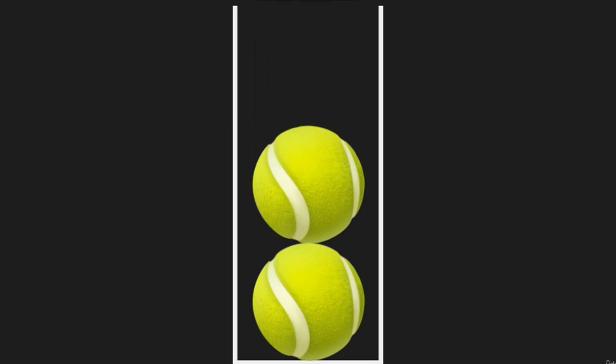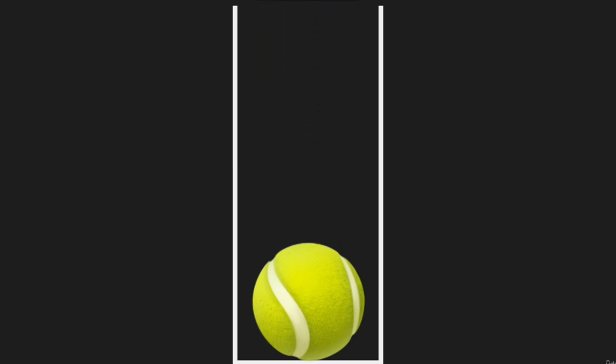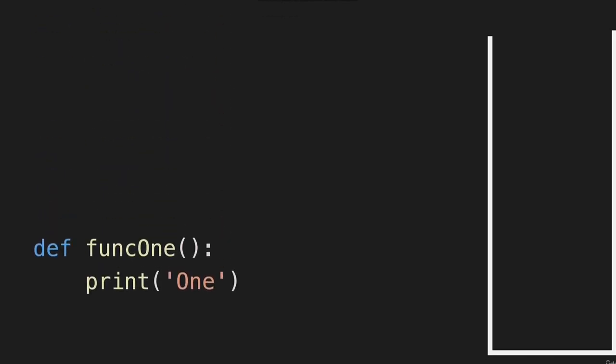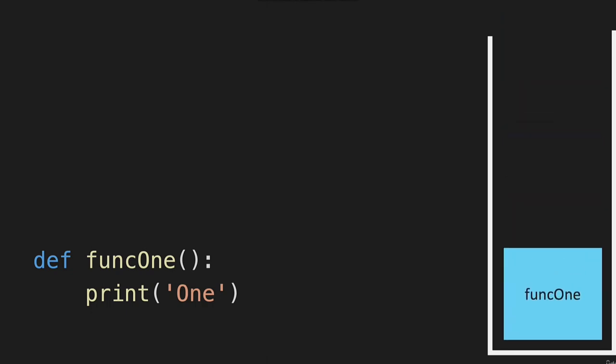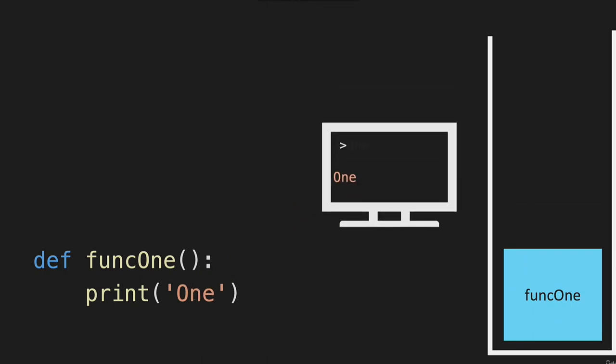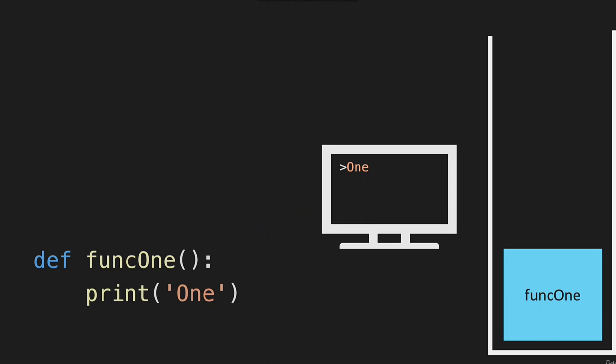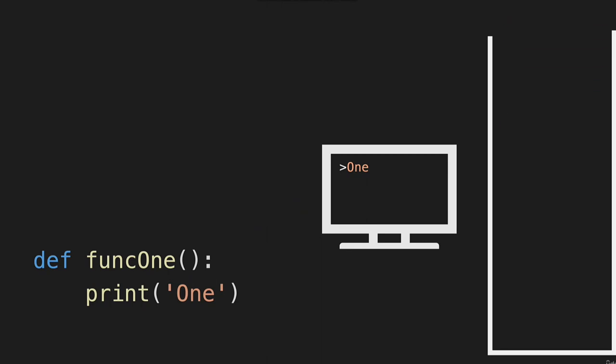Once that function is done running and you remove it, then the next function can run. Let's say we have a simple function called function one, and all it does is print out a string that says one. Function one, when you call it, will be put on the call stack. It will print out that string, and once it's done running, we remove it from the call stack.